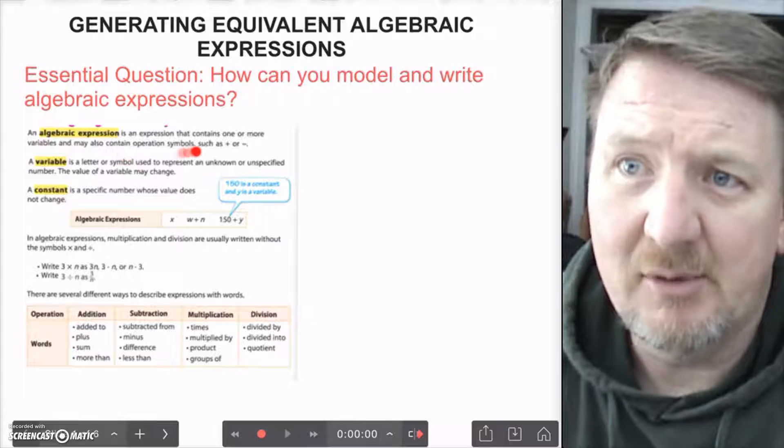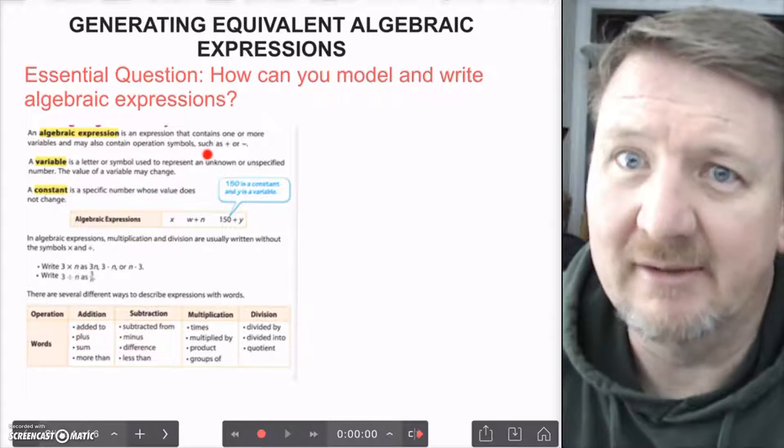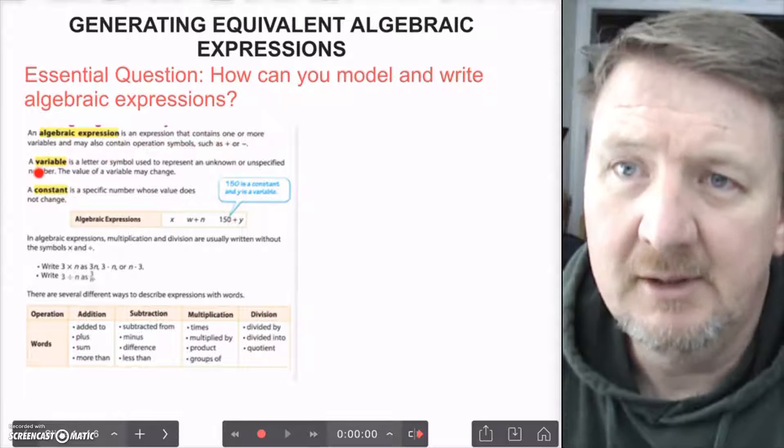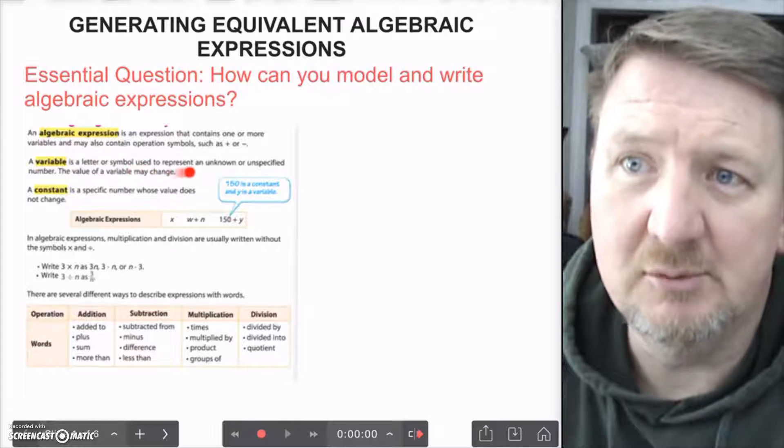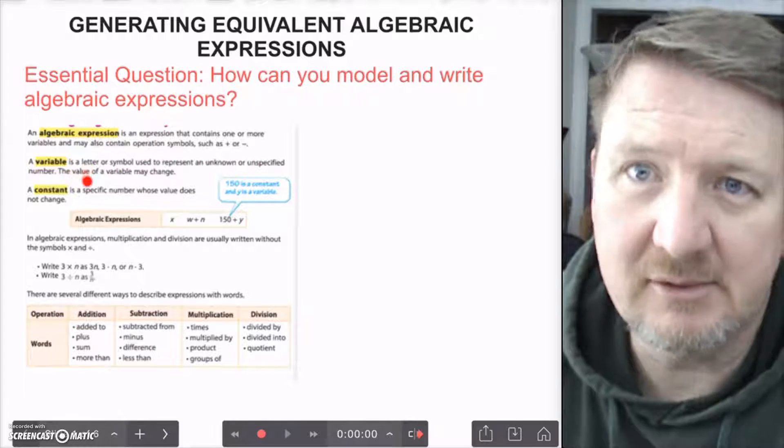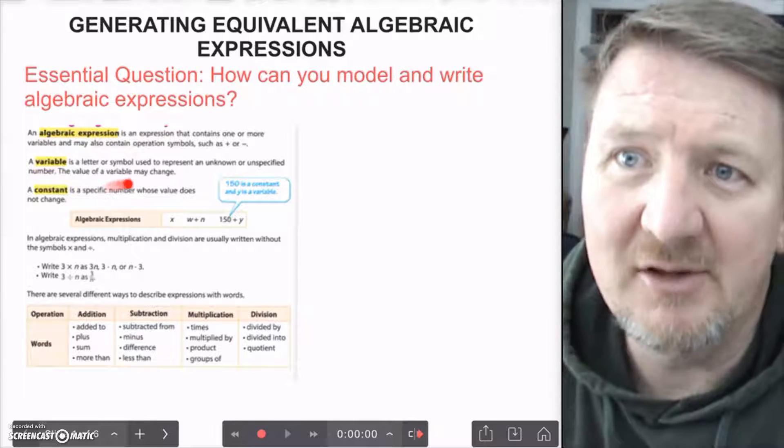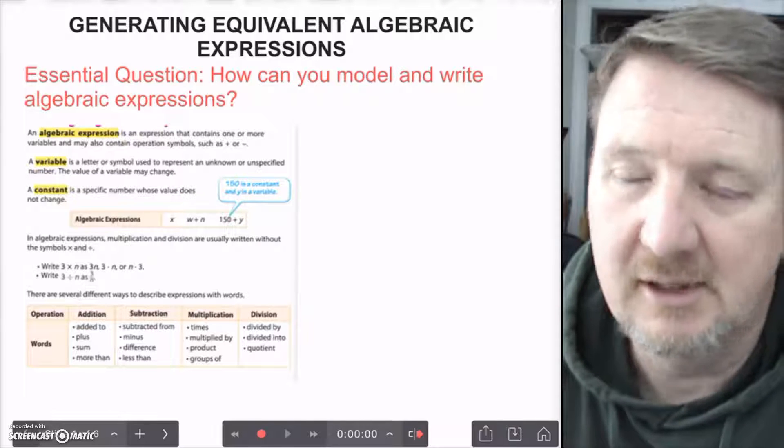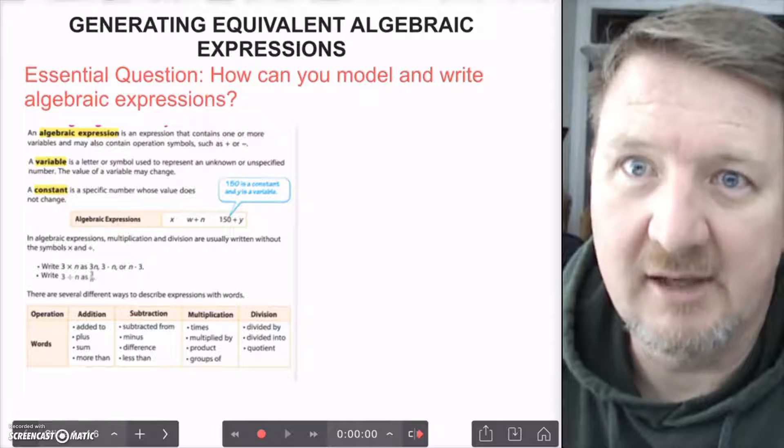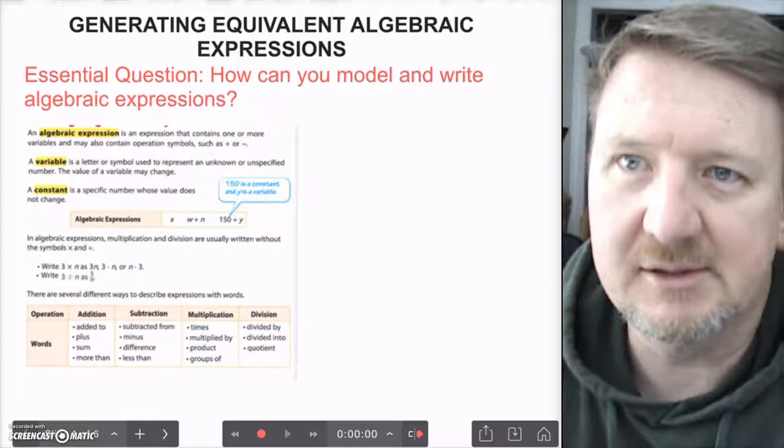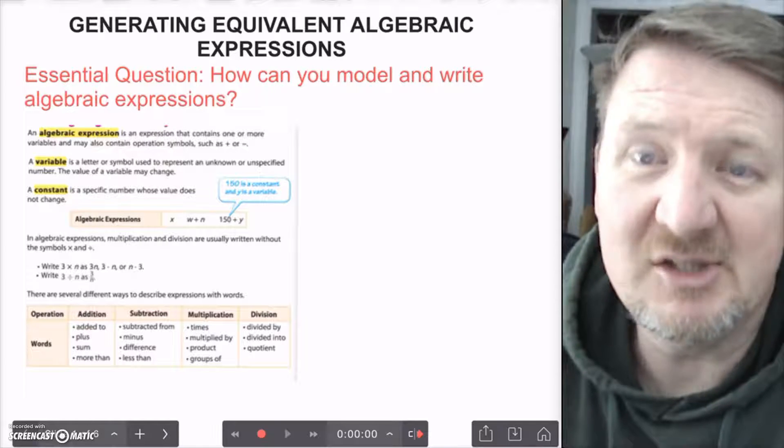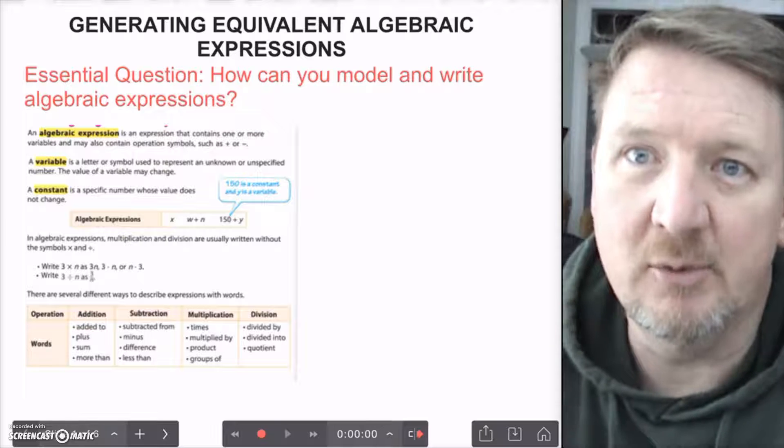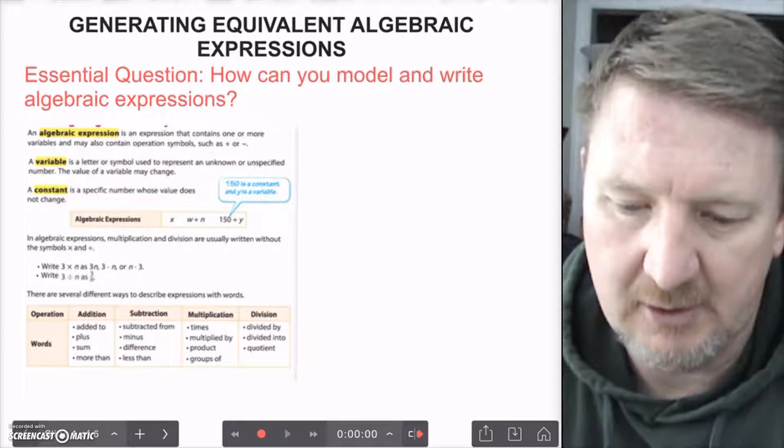It contains one or more variables. What's a variable? Well, that's the next definition. And it may also contain operation symbols - we've been talking about this all year, ever since you got into math, such as addition or subtraction. So, a variable is a letter or a symbol used to represent an unknown or unspecified number. The value of a variable may change.